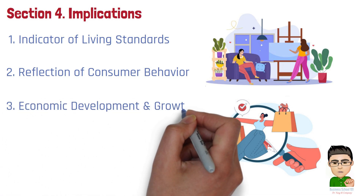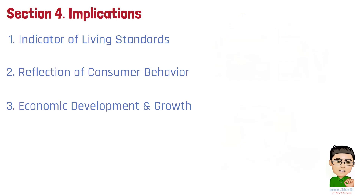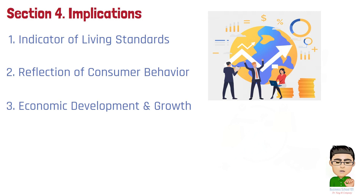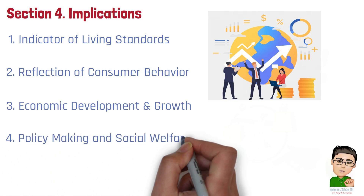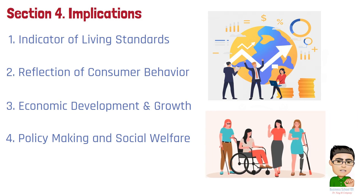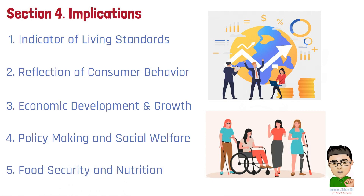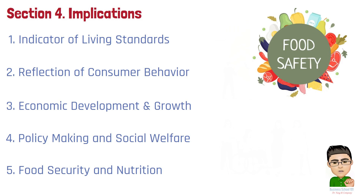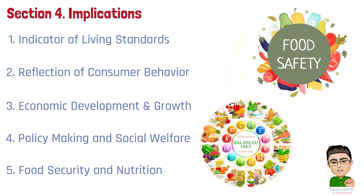Number 3: Economic Development and Growth. On a macro level, a decreasing Engel Coefficient for a country or region can signal economic development and growth. As economies develop and incomes rise, people can afford a more diverse range of goods and services, leading to a more balanced and sustainable economic structure. Number 4: Policymaking and Social Welfare. The Engel Coefficient can inform policy decisions related to social welfare and poverty alleviation, helping policymakers target resources to those most in need. Number 5: Food Security and Nutrition. A high coefficient may suggest that households are spending a large portion of their budget on basic food needs, which could indicate food insecurity or inadequate access to a diverse and nutritious diet.